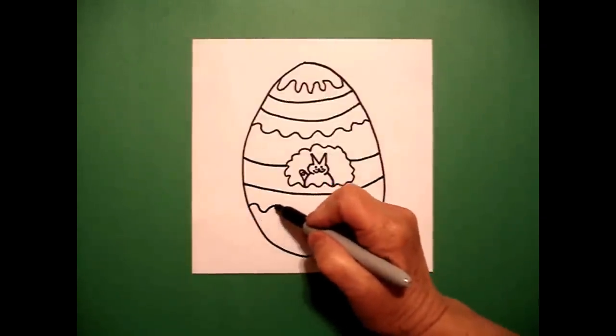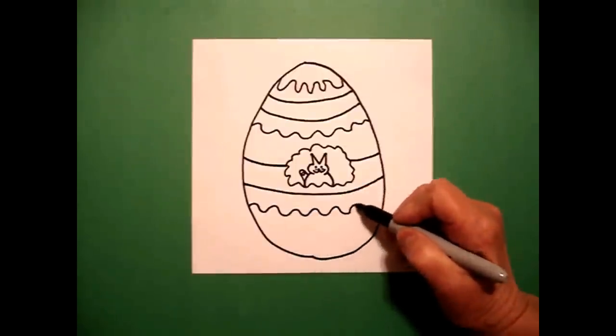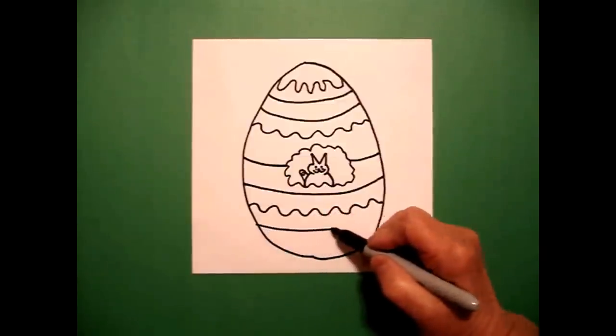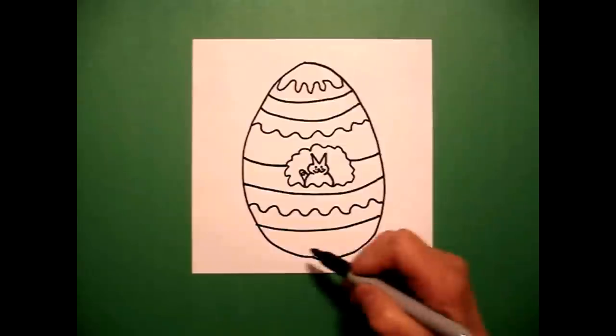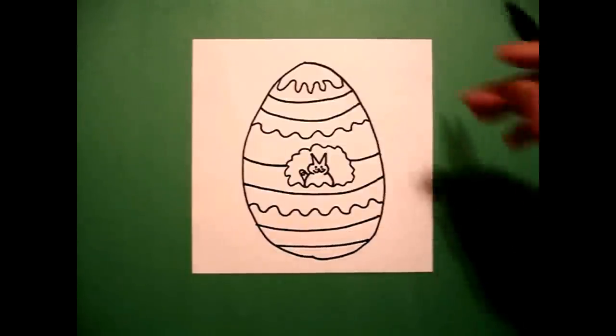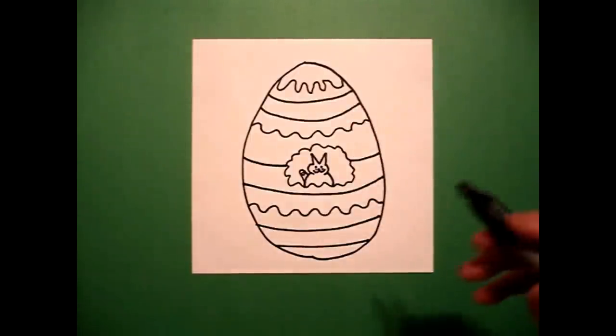My next line is going to be another wavy, wavy line across, a curved line across. And if you have room, one more little curved line across. Now, all of these lines can be changed. It's all up to you.